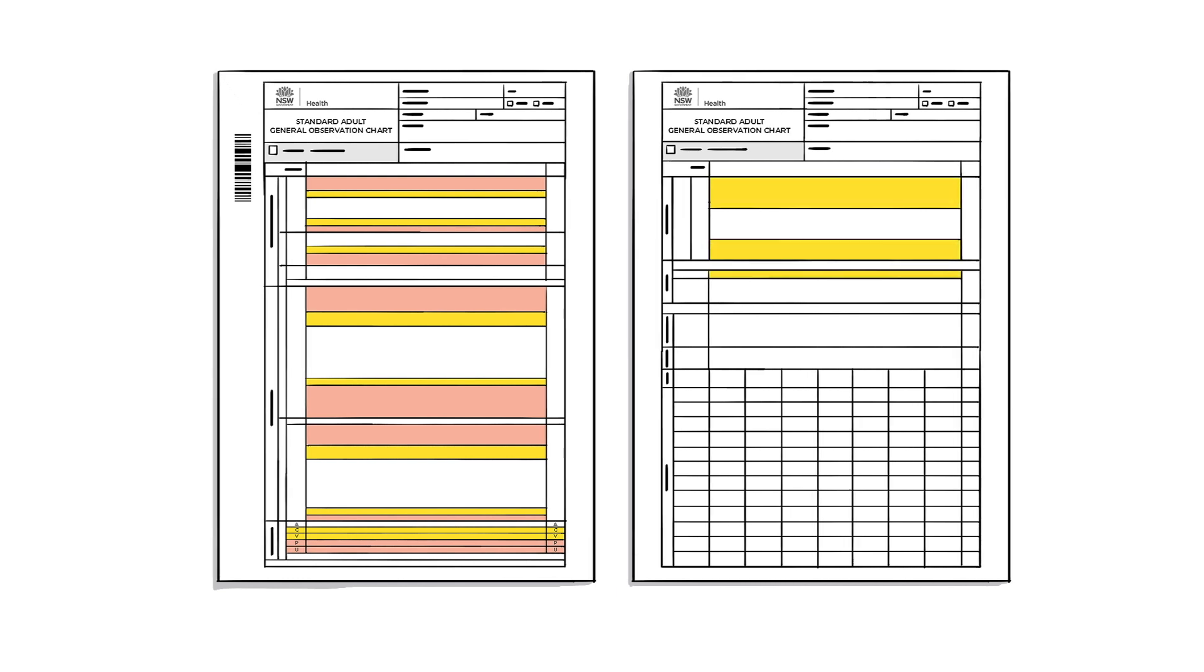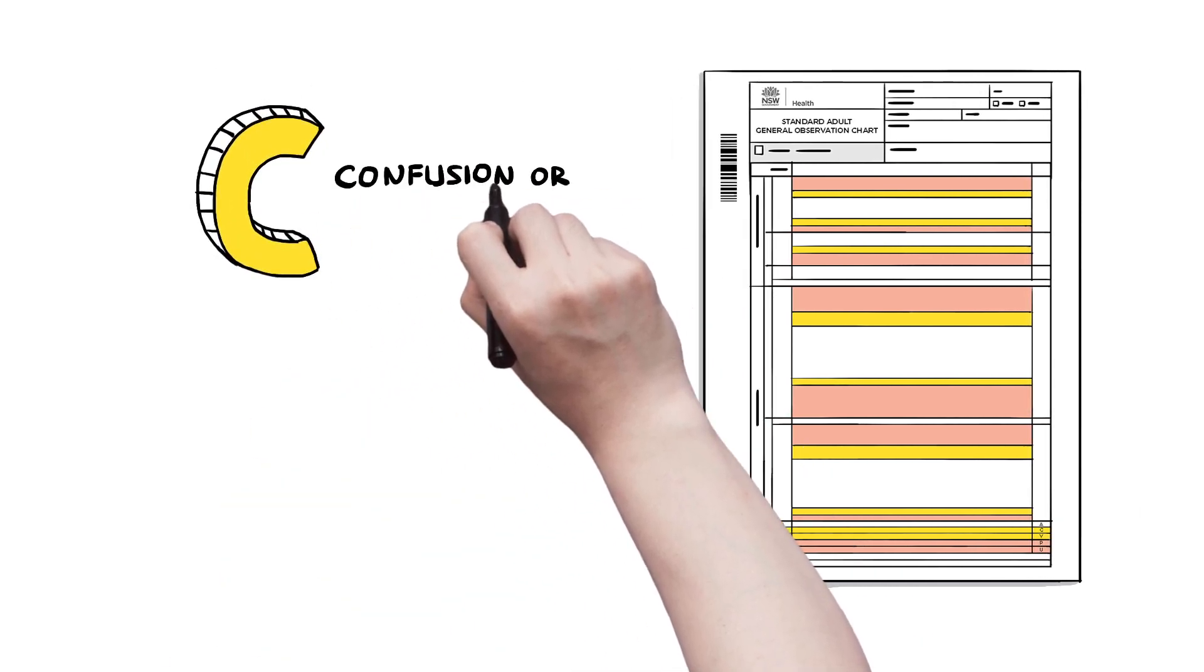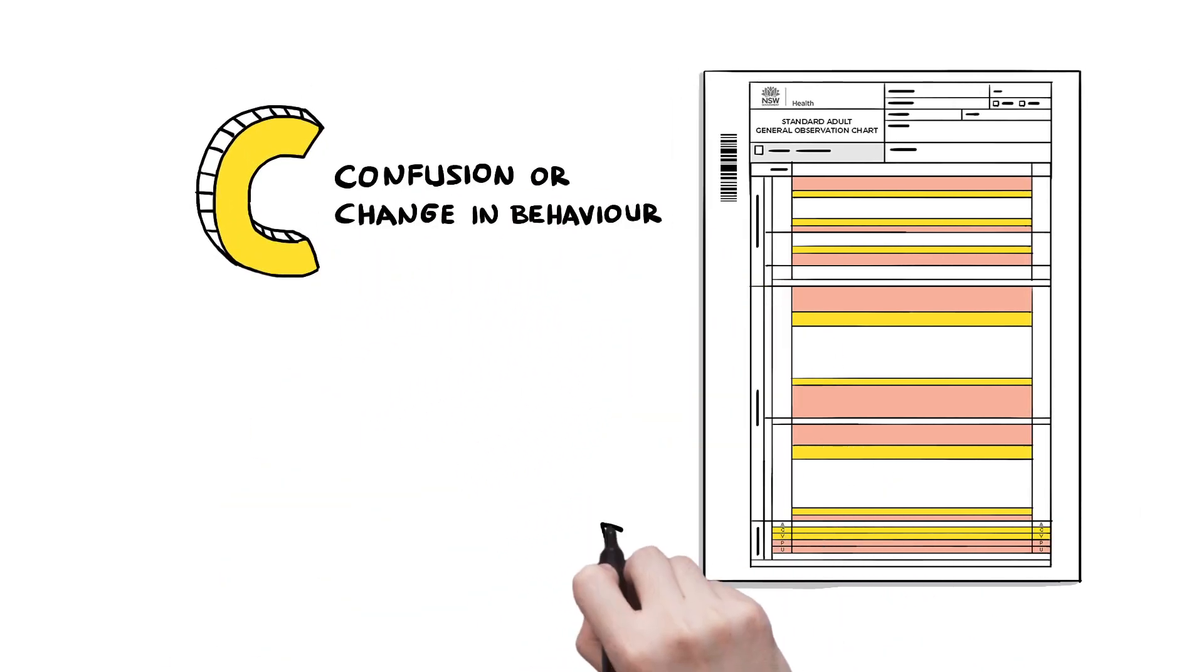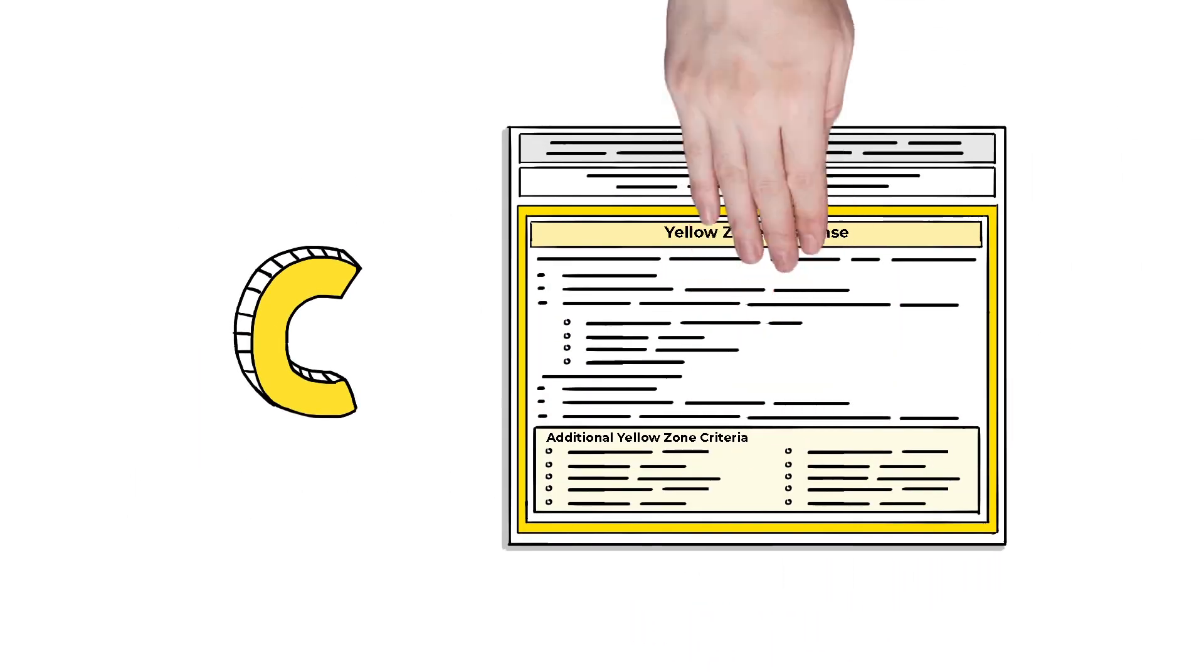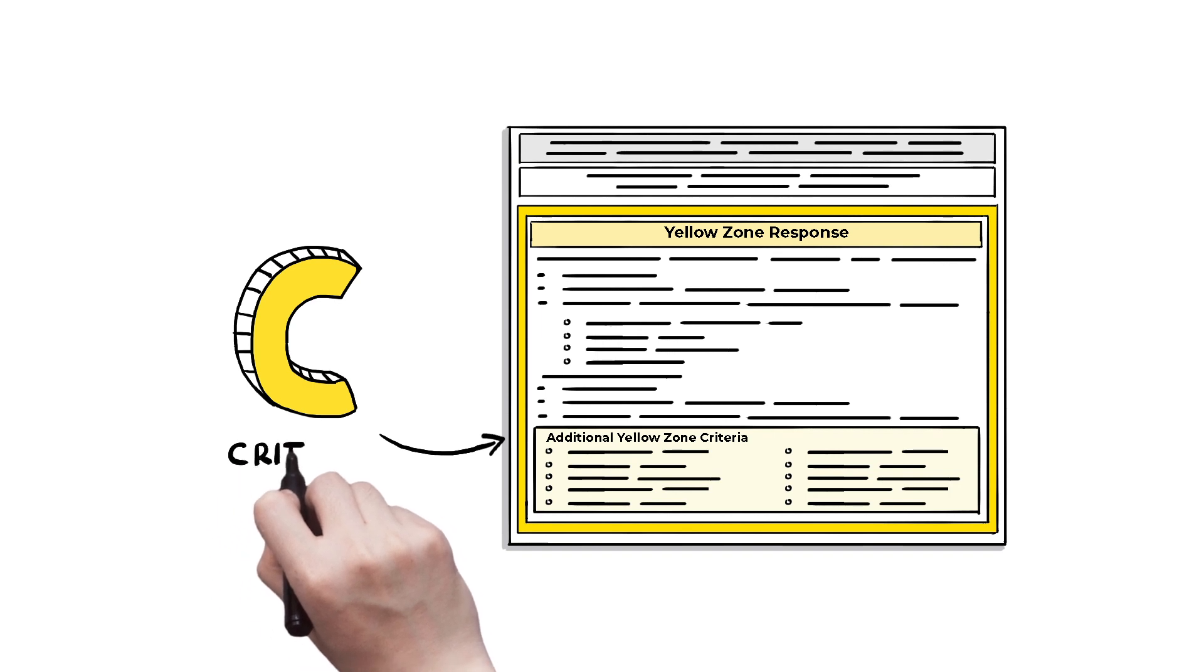The standard observation charts for adults and maternity have been updated to include C for new onset confusion or change in behavior in ACVPU. The C is not new to you. It was previously listed as an additional yellow zone calling criteria.